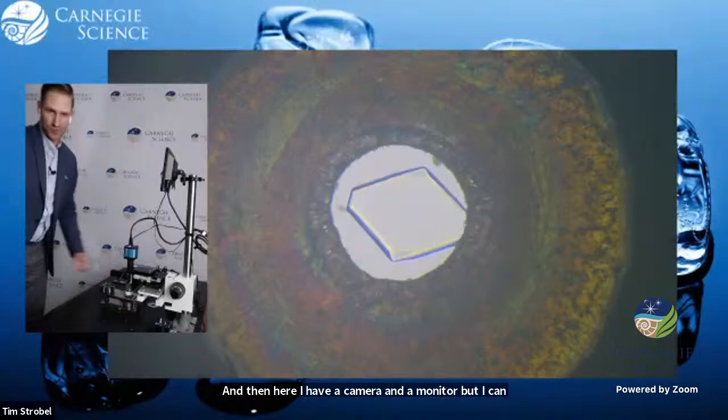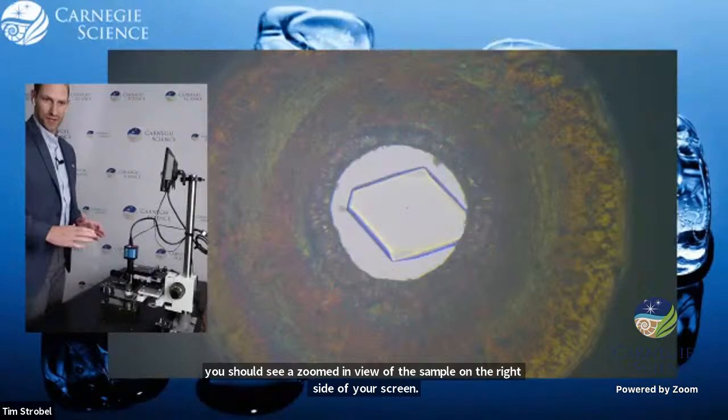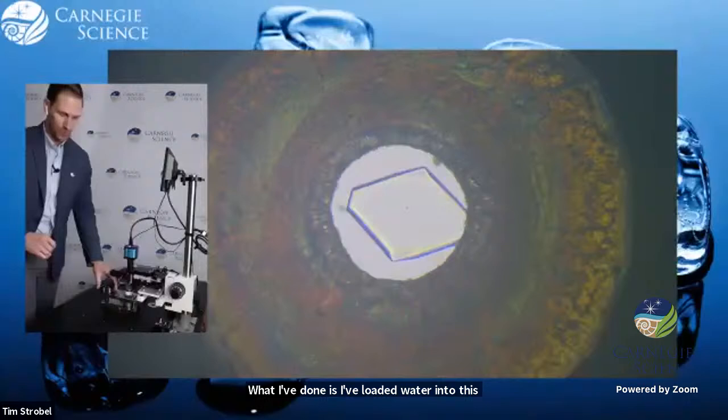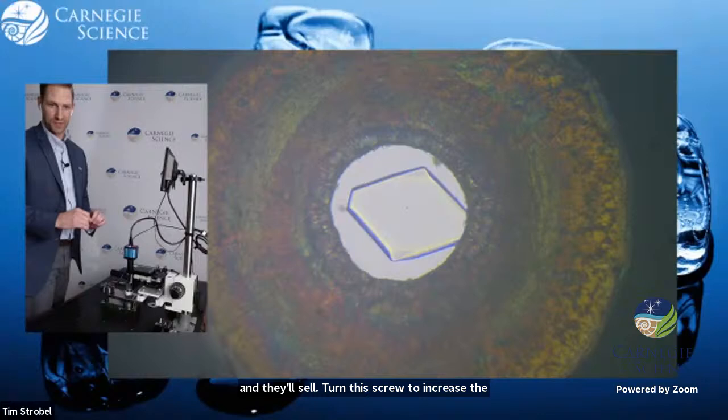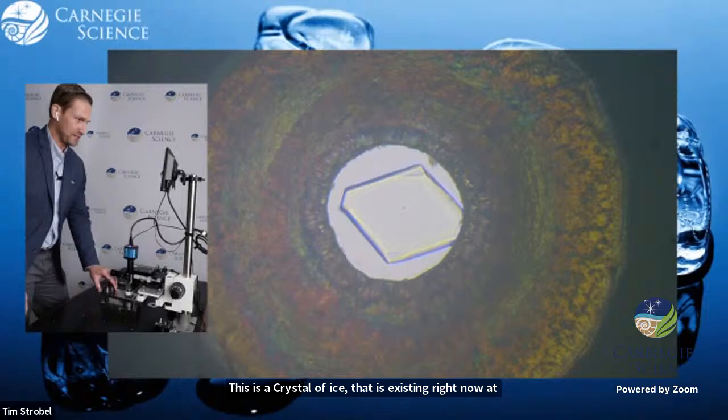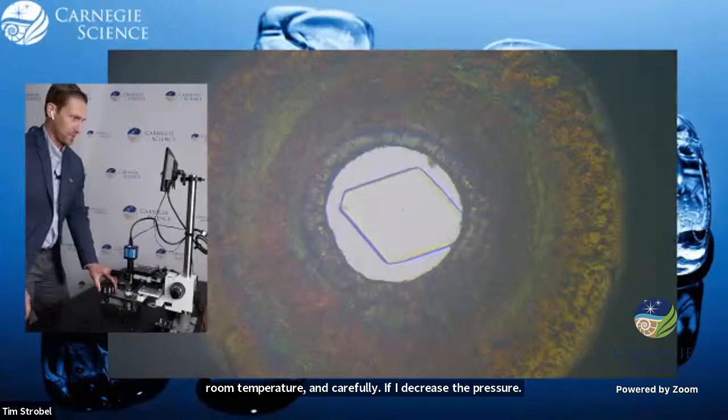Now you should see a zoomed-in view of the sample on the right side of your screen, showing the diamond anvil cell, the metallic gasket, the hole drilled in the center that's holding the sample. What I've done is I've loaded water into this diamond anvil cell and what you see is a crystal of ice at room temperature. As you can see behind me, I'm not in a refrigerator, this is a crystal of ice that is existing right now at room temperature.